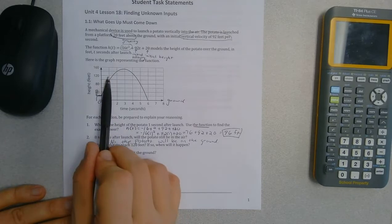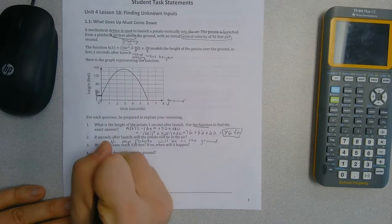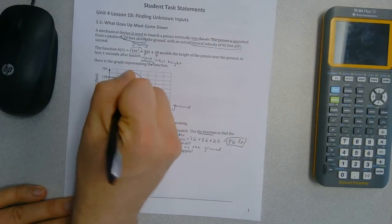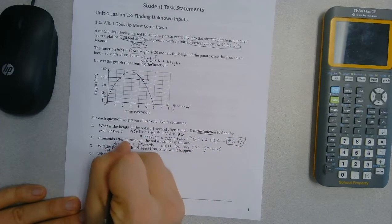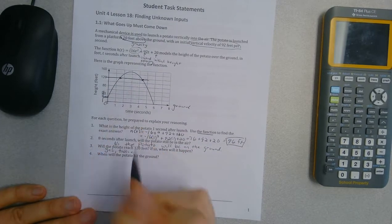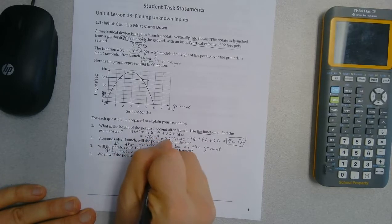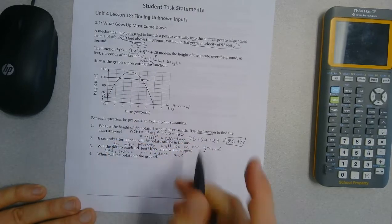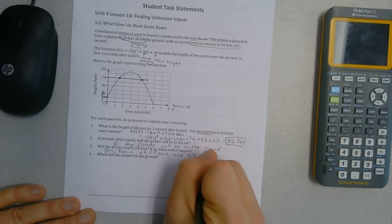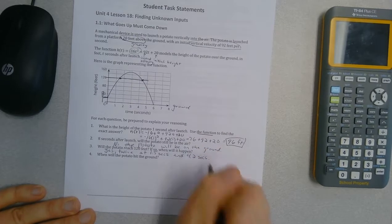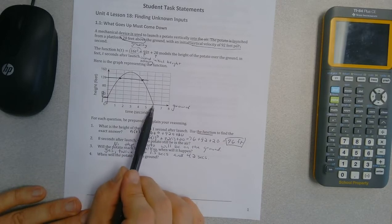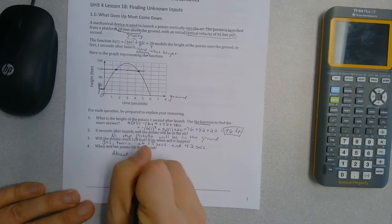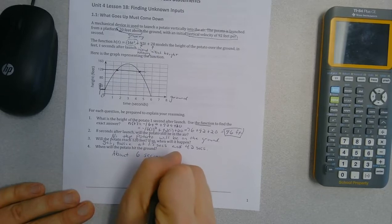Will the potato reach 120 feet? Actually yes, and it looks like if I look at 120 feet, I've actually two answers, one here and one here. So it's yes, twice. It's at 1.5 seconds and the other one maybe about 4.2 seconds. When will the potato hit the ground? Looks like a little bit before six seconds, but I'm just going to say about six seconds.